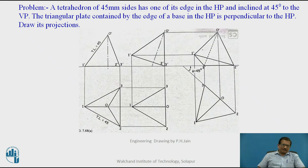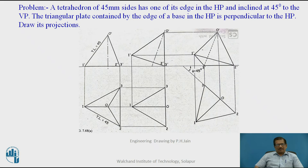This is called a tetrahedron. A tetrahedron is a solid of which all four faces are equilateral triangles. It is nothing but a pyramid of triangular base — a triangular base pyramid — of which all 4 faces (3 lateral plus 1 base) will be equilateral triangles. The problem: a tetrahedron of 45 mm side has one of its edges in HP and inclined at 45 degrees to VP. The triangular face contained by the edge of the base in the HP is perpendicular to HP. Draw its projection.